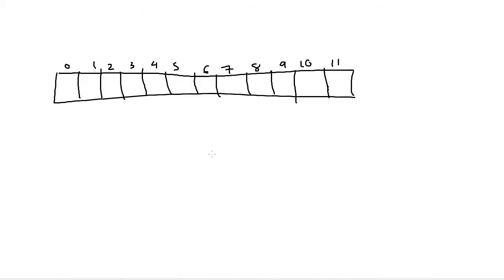The next thing we need to talk about is how do you implement a stack data structure. There are two main ways: one is using an array to store the underlying data, and the other is using a linked list. We'll do it both ways. Today we'll start with using an array. If you know how big the data is going to be, an array makes more sense. If it will grow and shrink a lot and you don't want to waste memory, a linked list might make more sense.